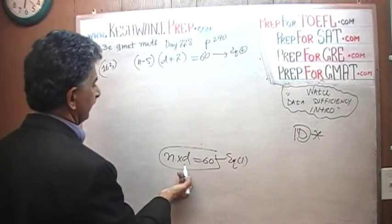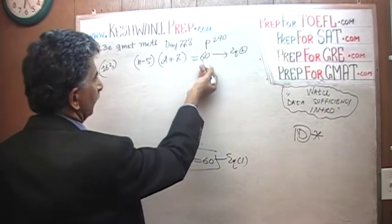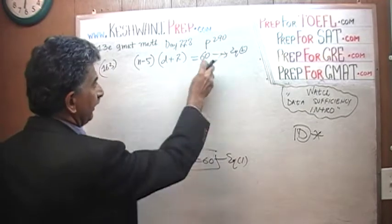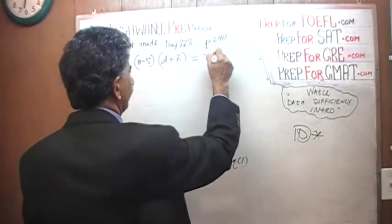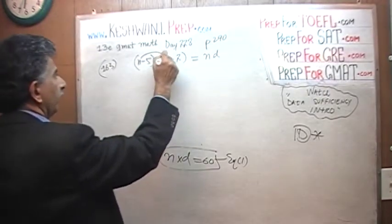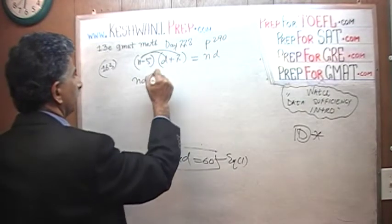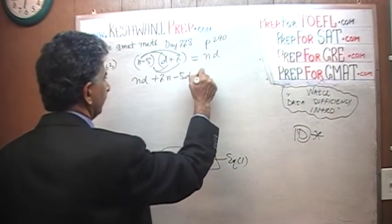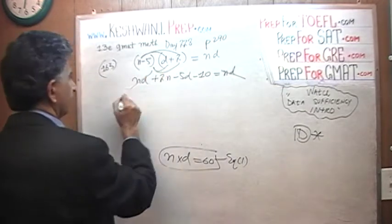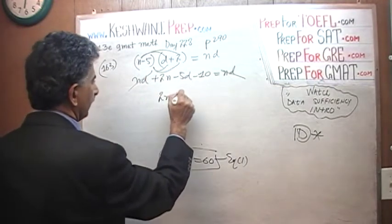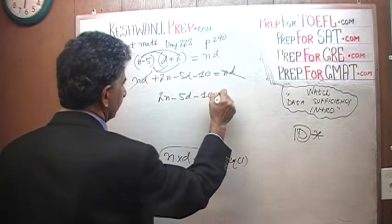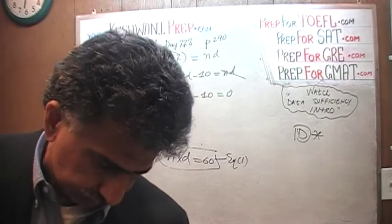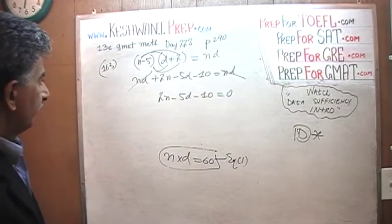So, here is the first statement, which is also equal to 60. This is the second statement, which is the second equation, which is also equal to 60. If we combine it together, we can put N times D in place of 60. Let's open it up. N times D plus 2N minus 5D minus 10 equals N times D. N times D cancels out, and we end up with 2 times N minus 5D equals 10, equals to 0.